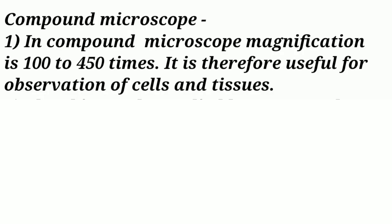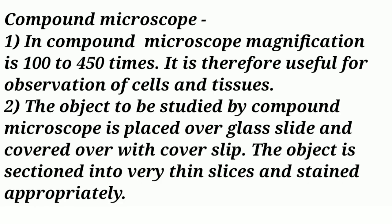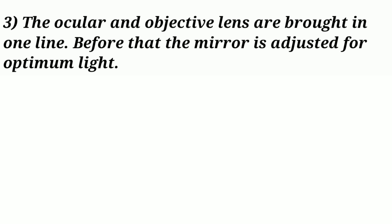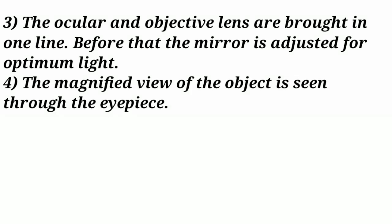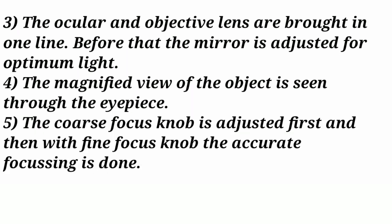Compound Microscope: In compound microscope, magnification is 100 to 415 times. It is therefore useful for observation of cells and tissues. The object to be studied by compound microscope is placed over glass slide and covered over with cover slip. The object is sectioned into very thin slices and stained appropriately. The ocular and objective lens are brought in one line. Before that, the mirror is adjusted for optimum light. The magnified view of the object is seen through the eyepiece. The coarse focus knob is adjusted first and then with fine focus knob the accurate focusing is done.